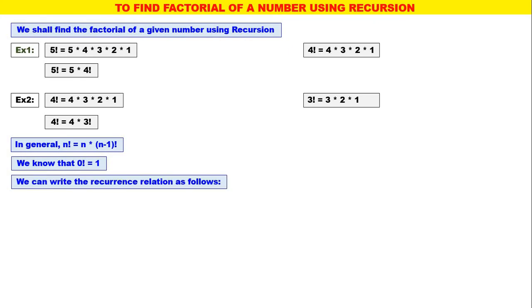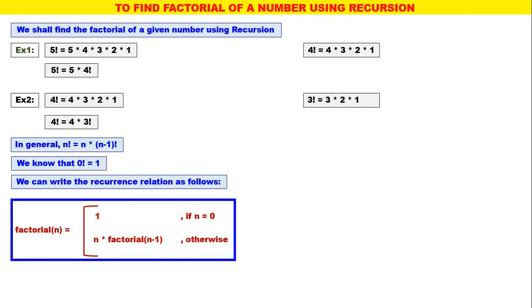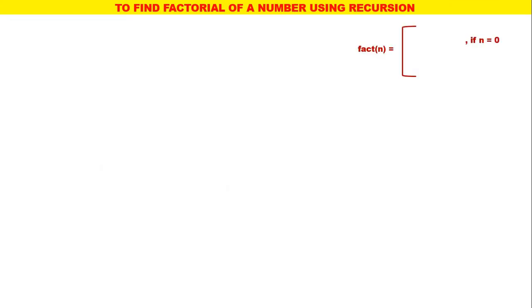We can write the recurrence relation or recursive definition as follows. Factorial of n: when n is equal to 0, it is 1 — that is, factorial of 0 is 1. Otherwise, it is n into n minus 1 factorial, that is, factorial of n equals n into factorial of n minus 1. This is the recurrence relation or recursive definition.